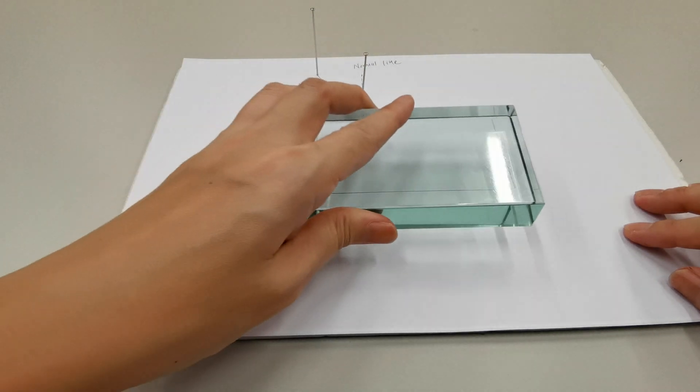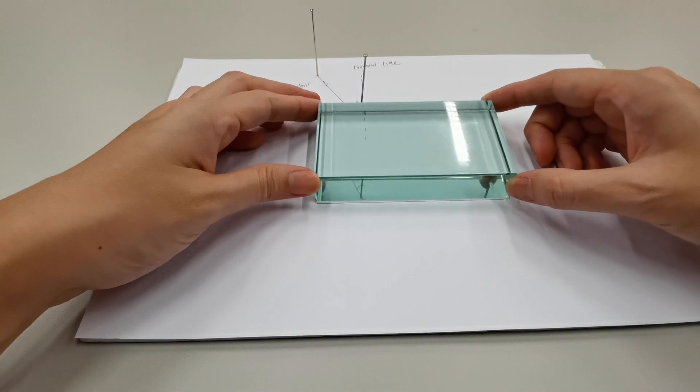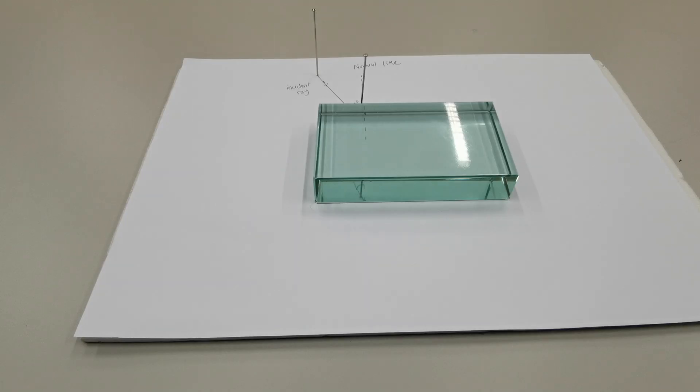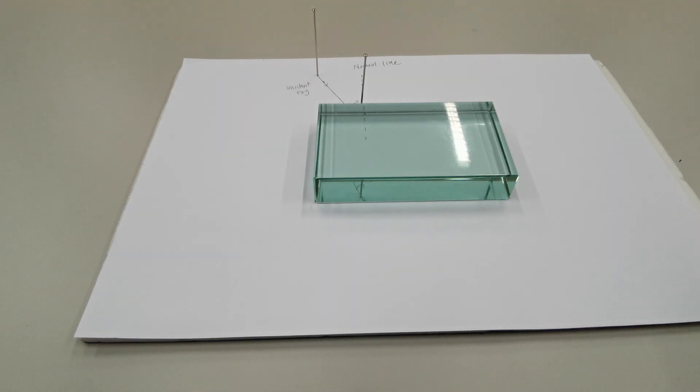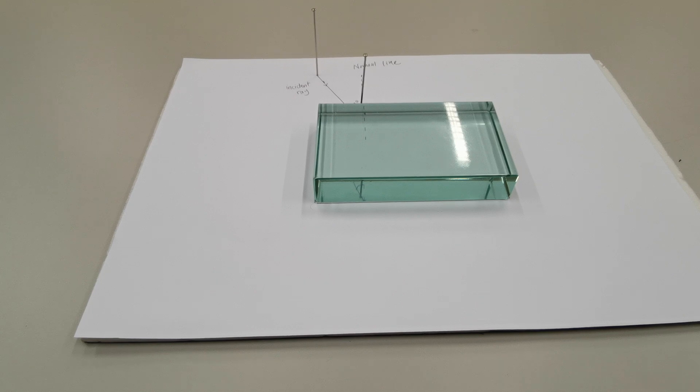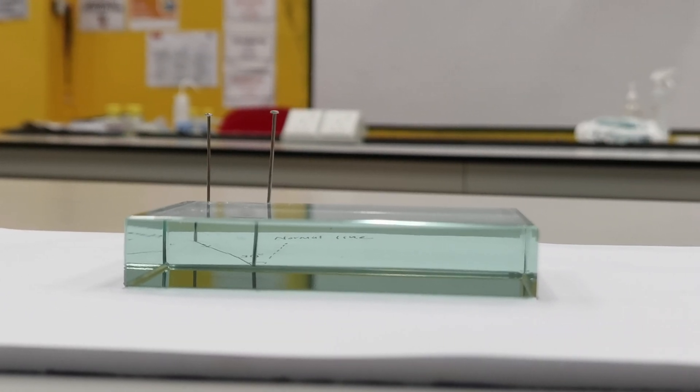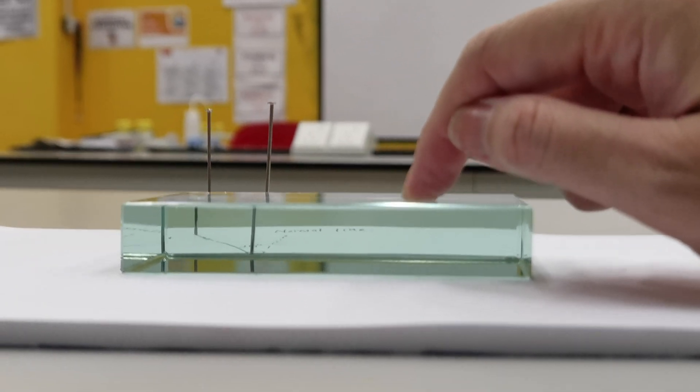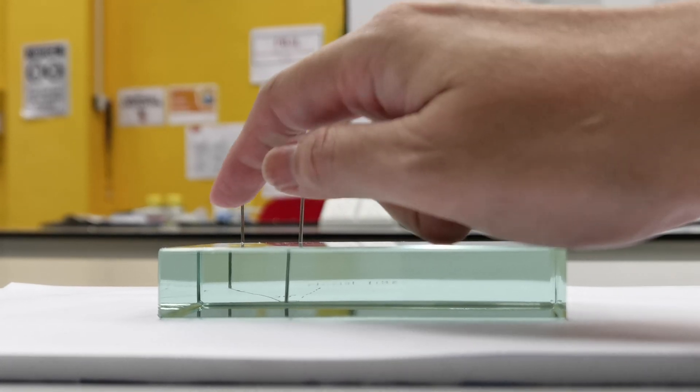Now, let's put the glass block back into the outline we have traced. Next, what we need to do is look at the pins from this side and observe the refracted images. We can't see it from this angle. We need to move lower. In order to observe the images, you need to observe it from this view. You can see the two original pins and within the glass block, if I move a little bit lower, you can see the images formed here and here.